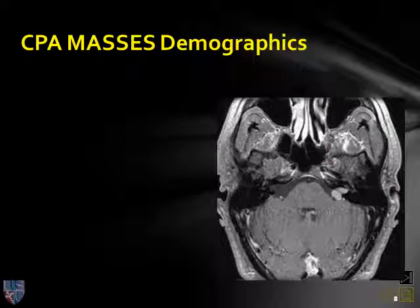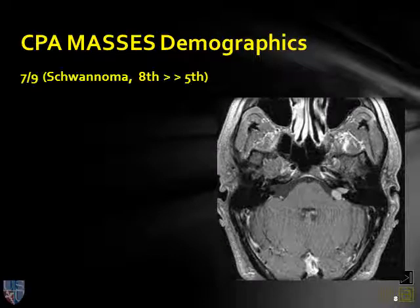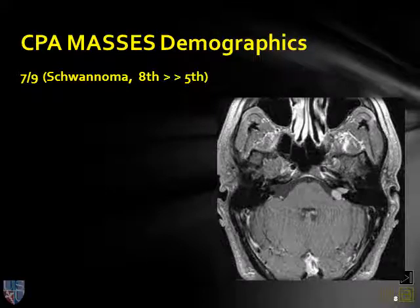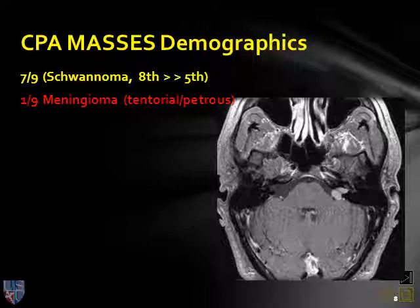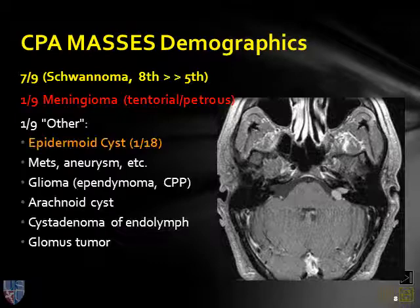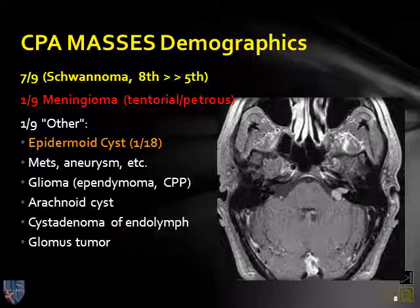In terms of the relative frequency of cerebellopontine angle masses, by far the most common is the schwannoma, and these most typically arise from the inferior division of the vestibular nerve — a portion of the eighth or vestibulocochlear nerve. The second most common lesion is a meningioma, which may arise from arachnoid attached to the tentorium cerebelli or the dura of the petrous bone. The third most common lesion is the epidermoid inclusion cyst.